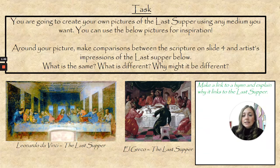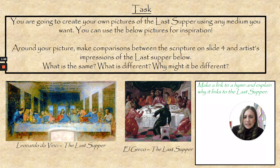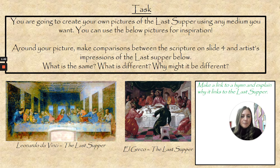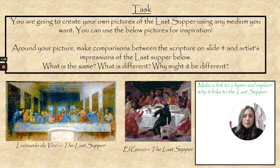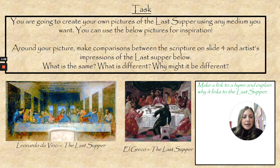What's the same in the scripture and the artist's impression? What's different? Maybe Luke includes details that the image doesn't, and maybe the images include details that Luke leaves out. Do we know who's there in Luke's scripture — is there much detail? Do the pictures leave out lots of detail maybe? And why might they be different? Think about when these pictures would have been painted — were they painted at the time it actually happened, or was it after the event? Then there's a challenge: make a link to a hymn and explain why it links to the Last Supper.